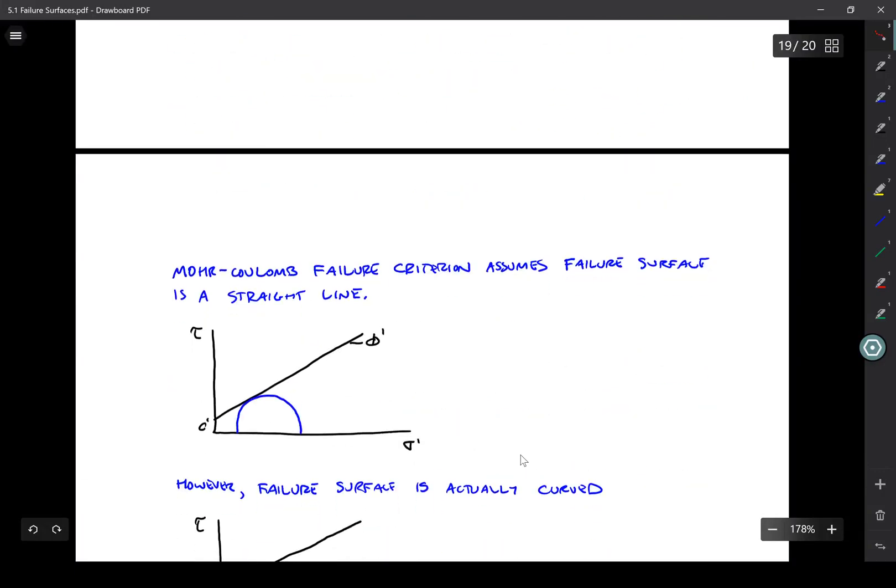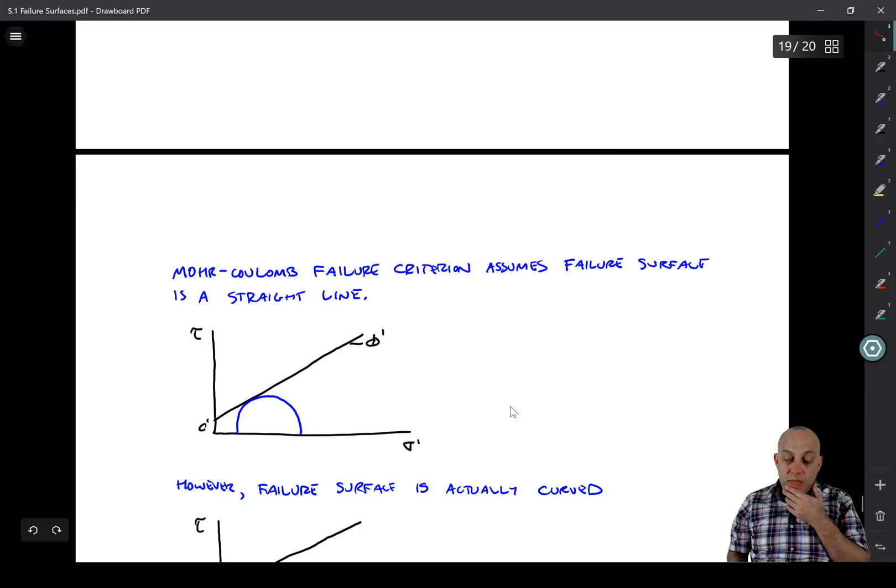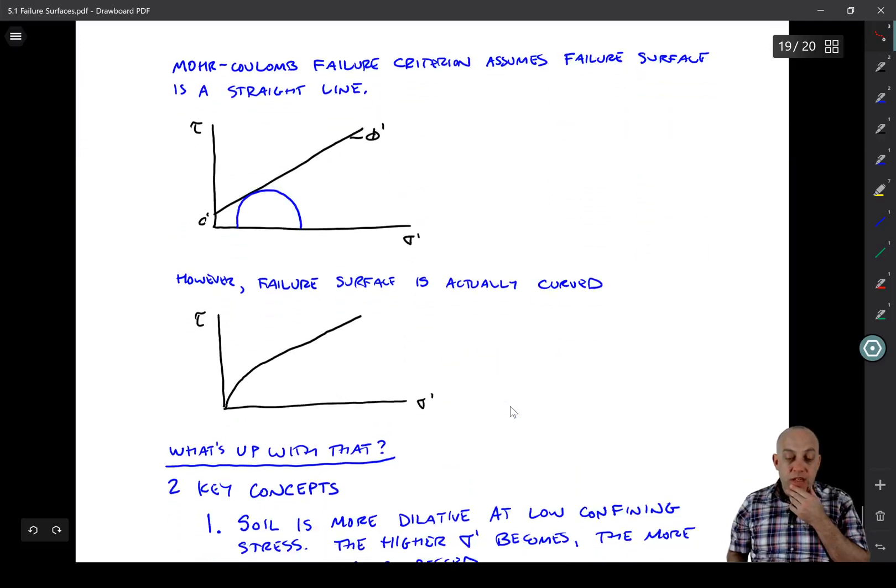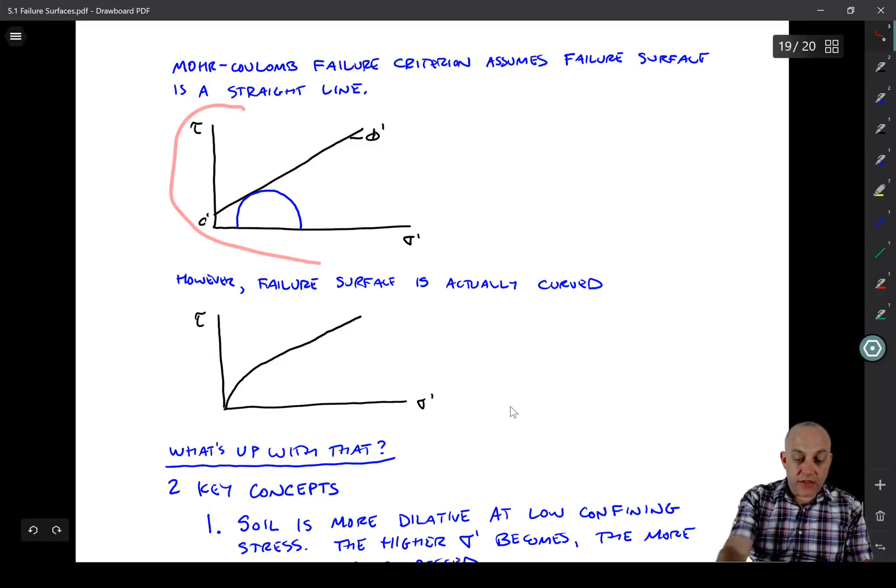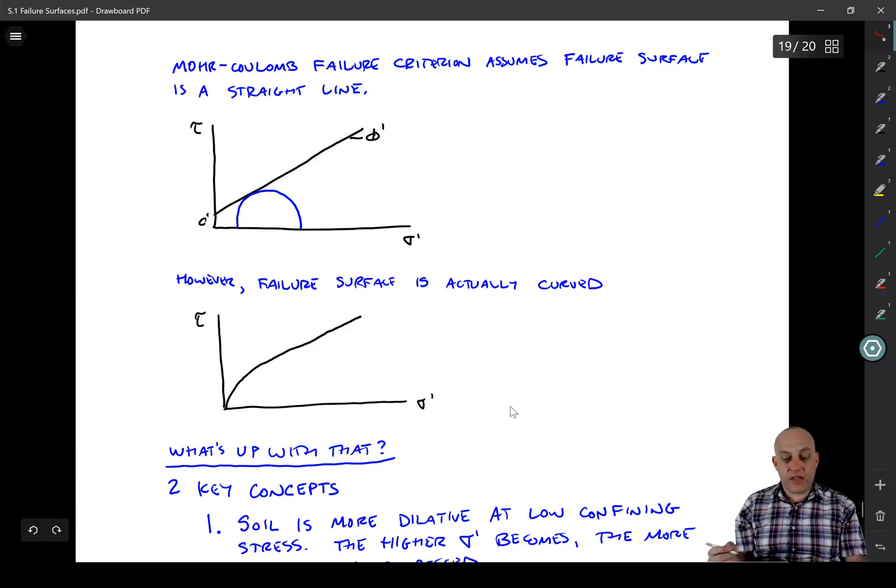So, okay, the reason why I wanted to show this is that these concepts have an important application to the Mohr-Coulomb failure criterion. We tend to assume that the Mohr-Coulomb failure criterion assumes that the failure surface is a straight line. So that's what I've drawn right here. Tau versus sigma prime. We've got this little Mohr circle and we're saying like here's the failure surface. That circle is at failure. And the surface has two parameters, a c prime, a phi prime, and it's a straight line.